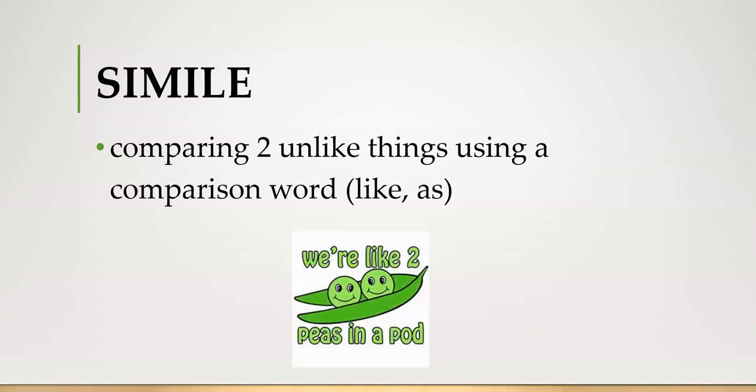An example would be we're like two peas in a pod. We're using our comparison word here, like. Well, we're not referring to peas actually. We're referring to people. This is an expression that we use. It's also called an idiom. We're saying that two people are so much alike that they're like two peas in one pod, comparing them to peas in a pod. People to peas, not the same thing. This would be a simile.